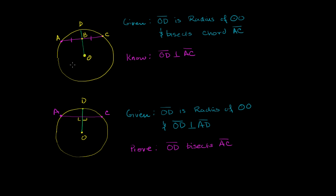In a previous video, we've already shown that if we have some circle centered at O, and OD is a radius that bisects chord AC — meaning AB is equal to BC — then OD will be perpendicular to AC. If you want to look it up, search Khan Academy for 'radius is perpendicular to chord' and you'll find the proof.